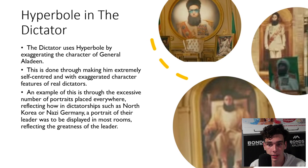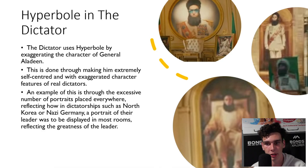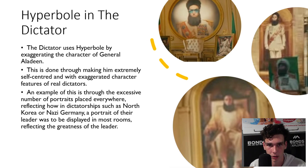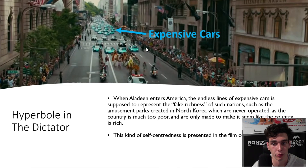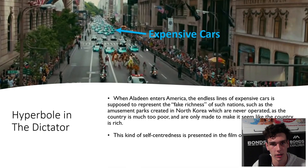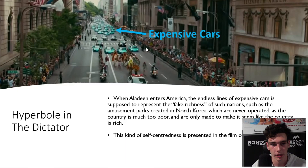Hyperbole is used in The Dictator by exaggerating the character of General Al-Adeen, who is seen as an extremely self-centred character and an exaggerated form of many real dictators. An excessive number of portraits of Al-Adeen can be seen throughout the movie, portraying him as godlike and as a figure to be worshipped, reflective of Hitler and Kim Jong-un. Another example is through the use of expensive sports cars upon Al-Adeen's entry into the United States, reflecting the fake level of richness seen in third world countries — comparable to the fake amusement parks in North Korea, which are created but rarely operated to make the country look wealthy while the people are starving.